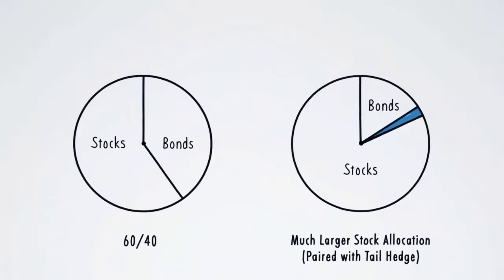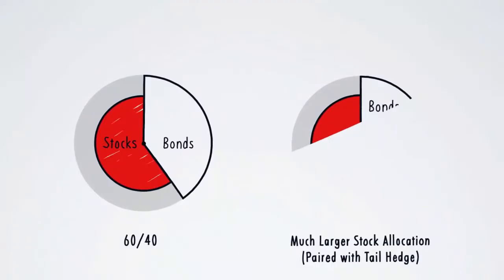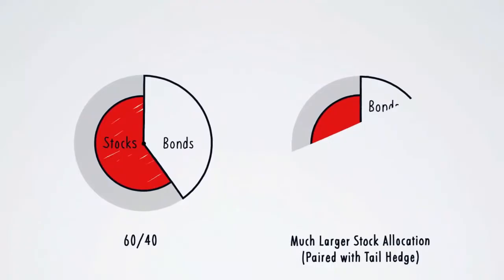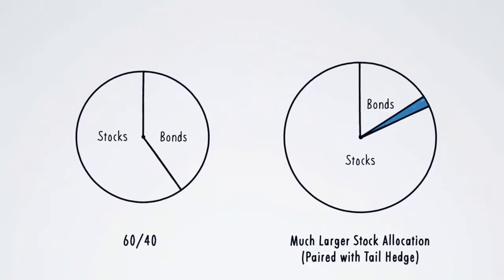The tail hedge allows for a bigger slice of stocks in the investment pie than the 60-40 portfolio because the stocks are protected in a steep sell-off. The tail hedge portfolio thus indirectly and counterintuitively beats the 60-40 portfolio, as well as most alternative investments and other supposed low risk things.